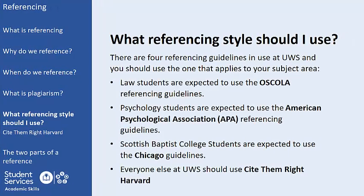There are lots of different referencing styles in use nowadays. Different universities will have different expectations as to what referencing style they expect students to use, and there are at times variations between the style you are expected to use depending on the subject area. The key thing is that we adhere to the correct style for the university and subject area that we are working in. There are four referencing guidelines in use at UWS. Law students are expected to use the OSCOLA referencing guidelines. Psychology students are expected to use the American Psychological Association referencing guidelines. Scottish Baptist College students are expected to use the Chicago guidelines. Everyone else at UWS should use a style called Cite Them Right Harvard.